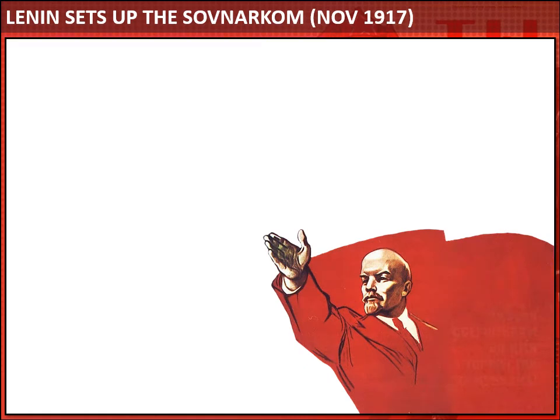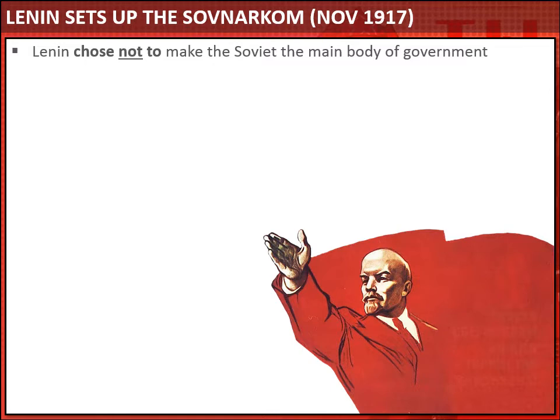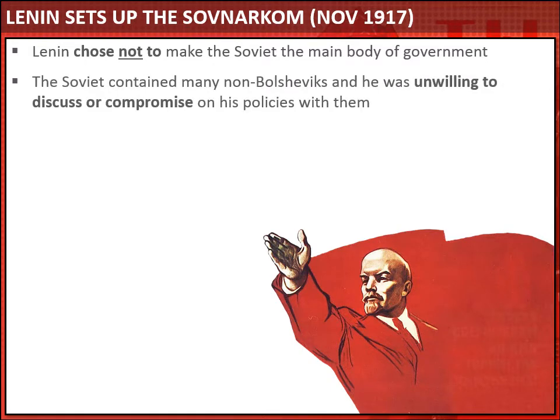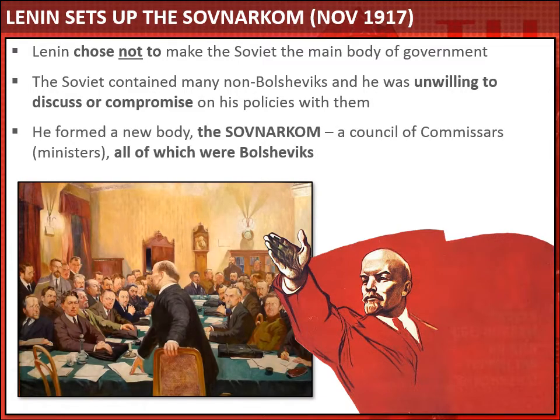Let's look at the new government which Lenin set up. Against the expectations of workers, soldiers and peasants, Lenin chose not to make the Soviet the main body of government, because the Soviet contained many non-Bolsheviks and Lenin was unwilling to compromise with those other parties. So Lenin set up an entirely new body called the Sovnakom. This was effectively a council of commissars — about 30 to 40 of them, each holding a different position — and initially all of them were Bolsheviks.